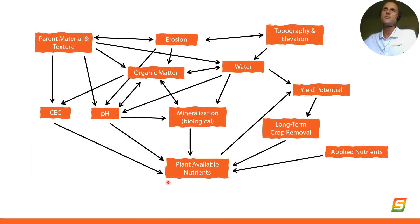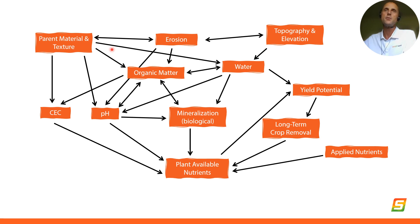One of the most common uses for SWAT maps is to better understand plant available nutrients so that we know how many more nutrients to add to reach our given yield potential, which is largely driven by plant available water. The starting point for all these factors that drive plant available nutrients starts with two key things: parent material and its texture and salt characteristics that we can measure with an EM sensor like in the SWAT box, and topography and elevation. Those two key things can have varying influence depending on what field we're in, and that's why every SWAT map is unique to each field.